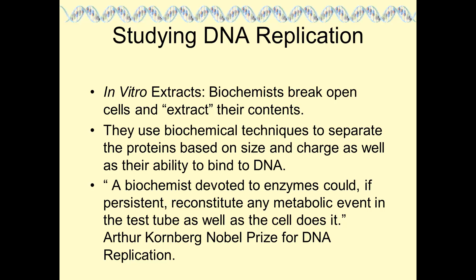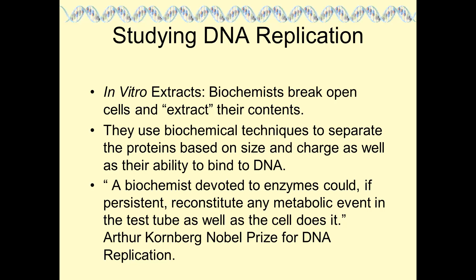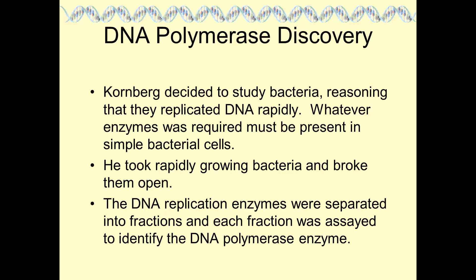Kornberg took apart all the components and put them back together to identify the essential components of DNA replication. He worked on bacteria because they replicate in 20 to 40 minutes, so the necessary enzymes had to be present. He isolated DNA replication enzymes into fractions, recombined them to reconstitute cellular function, and identified the enzyme he called DNA polymerase.